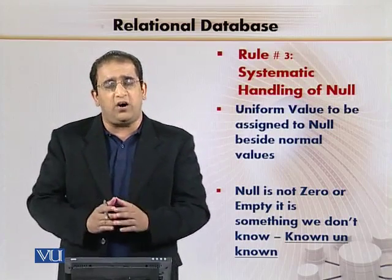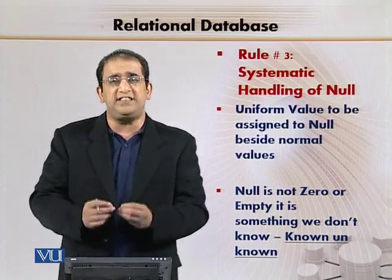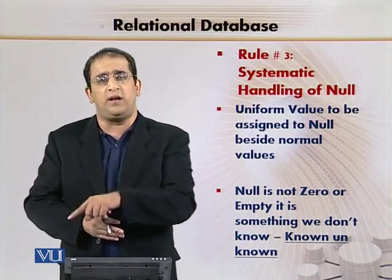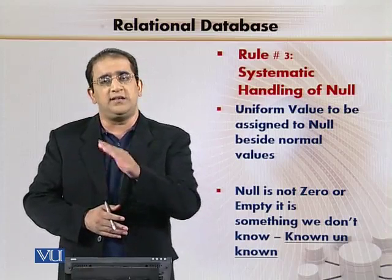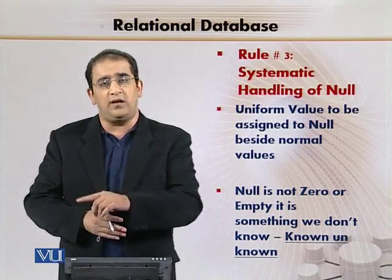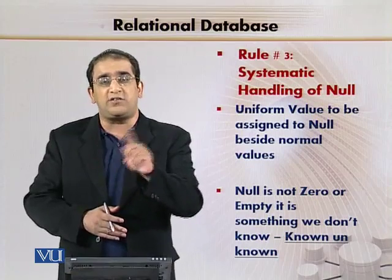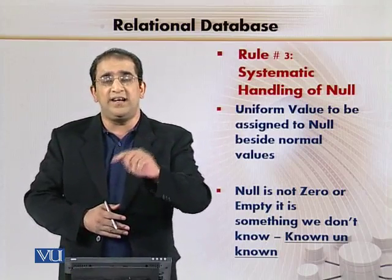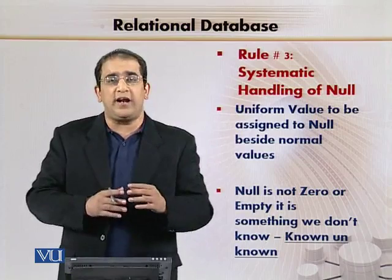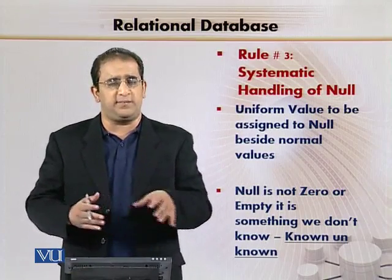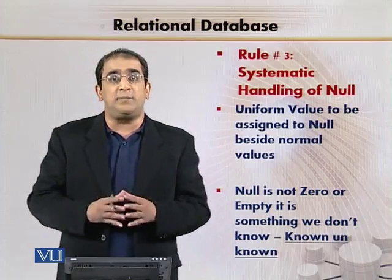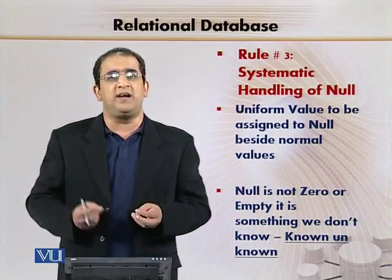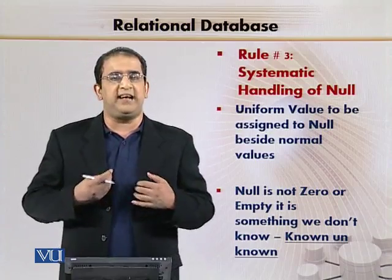In a given RDBMS, in a given underlying framework, N-U-L-L will have a constant meaning — a constant representation of missing or inapplicable information. Yeh bahut tricky cheez hoti hai kyunke if you do addition with null you will have null, you won't have zero. Zero plus null is equal to null, two plus null is equal to null, three multiply by null is equal to null — not three. You cannot equate a null value with zero or with empty space. Null is something different from zero or one. It's basically a known unknown which we don't know, but we can tell there is something.